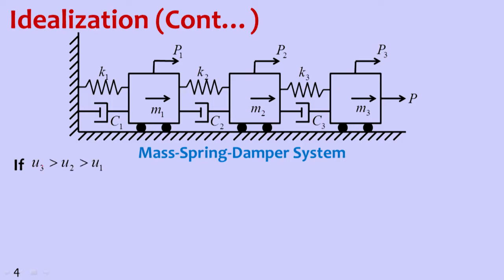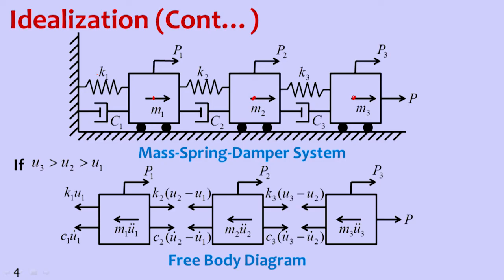We take the assumption that displacement at mass 3 is U3, at mass 2 is U2, and at mass 1 is U1. U3 is greater than U2, and U2 is greater than U1, meaning there is elongation in both springs. If U1 is greater than 0, there is elongation in the first spring. Now, taking this into consideration, we draw a free body diagram for each mass.